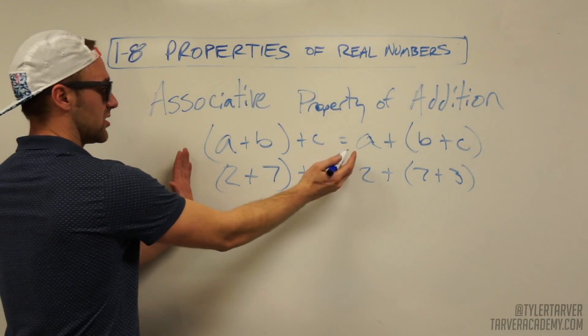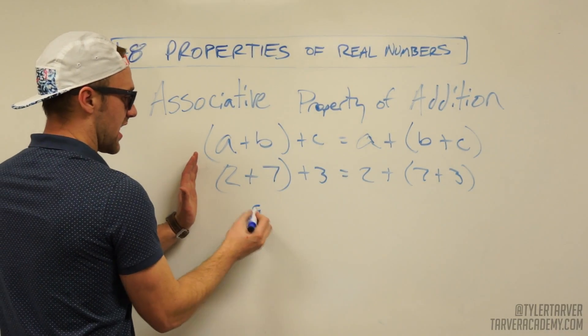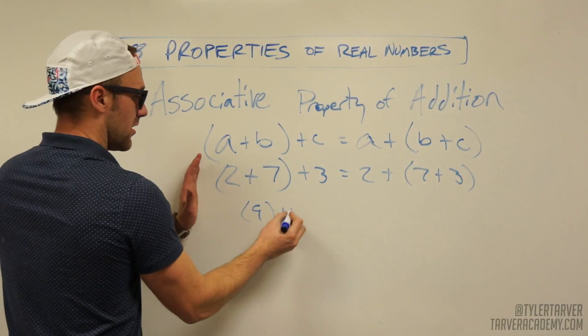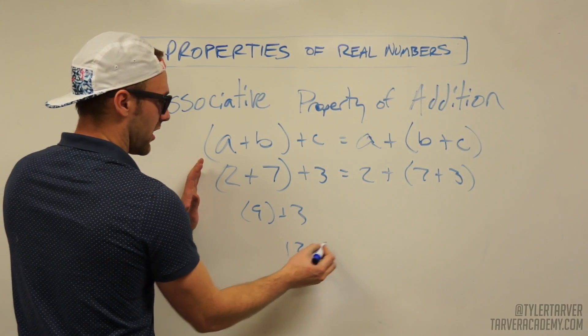So now we're going to solve it. Let's solve this side first. Two plus seven is nine, plus three. Nine plus three is 12.